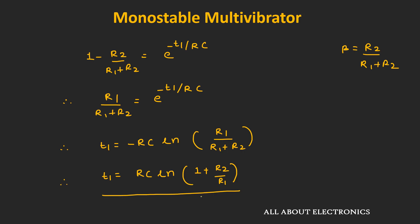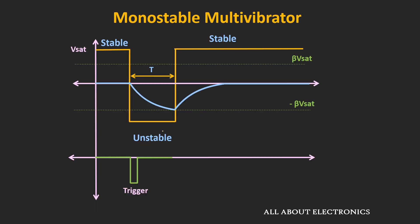So t1 = RC × ln(1 + R2/R1) is the time for which the output of the monostable goes into the unstable state, and this circuit can be used as a timer. Note that a trigger signal is required to change the state, and the duration of the trigger signal should be much less than the time period t for which the monostable stays in the unstable state.